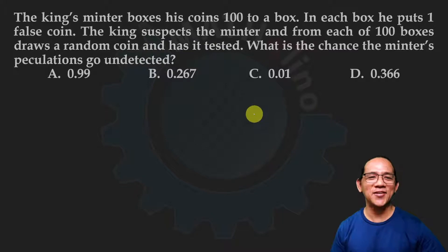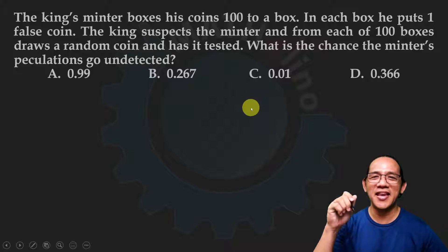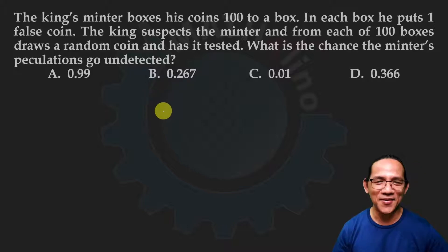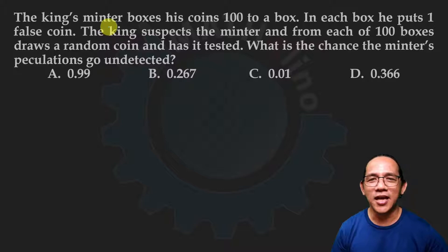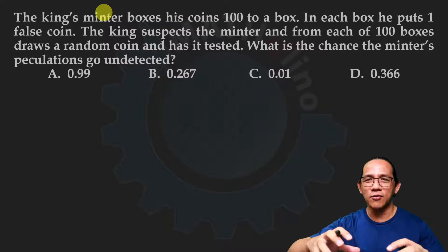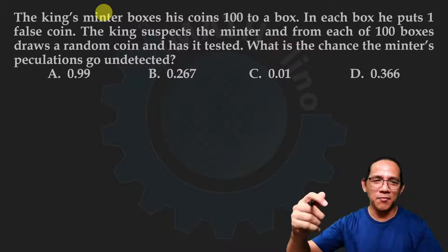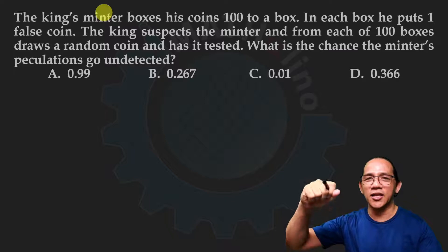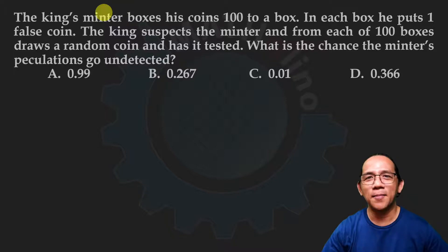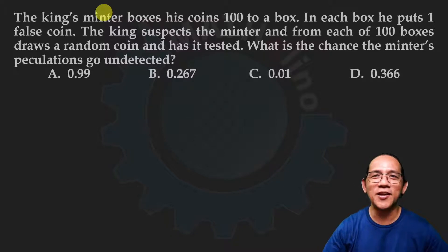The key to our solution is understanding the situation. To better understand, let's make a story. There is a minter — a maker of the king's coins. Let's say he melts gold coins and mints them using a mold, making new coins. In today's terms, we can compare this to the national printing press here in the Philippines.